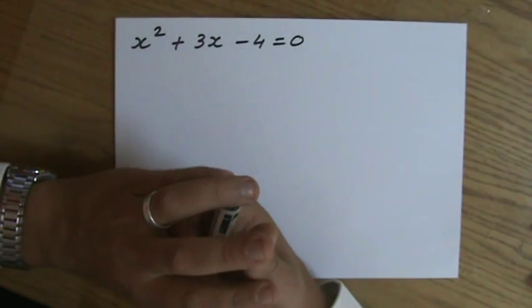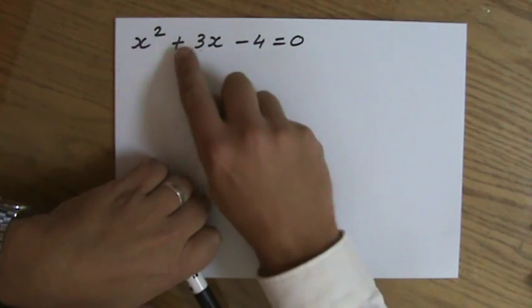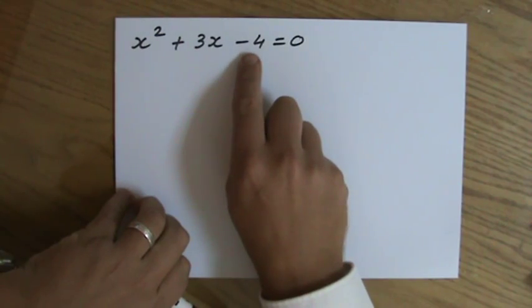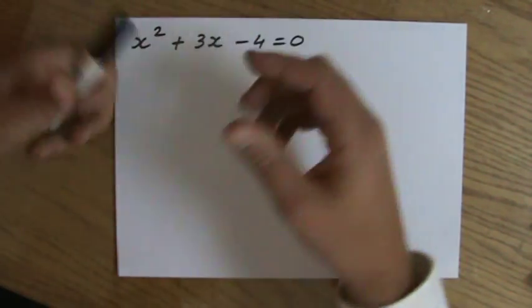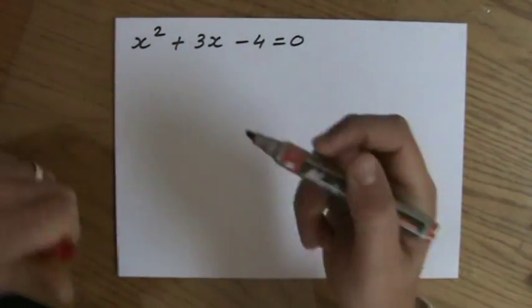So first of all, quadratic equations, the strategy is you have to equal it to 0 and it has to be in the correct order. First the term of the x squared, then the term of the x, then your number, your constant. And in this case that has already been done for you, but sometimes you have to rearrange it a little bit yourself.